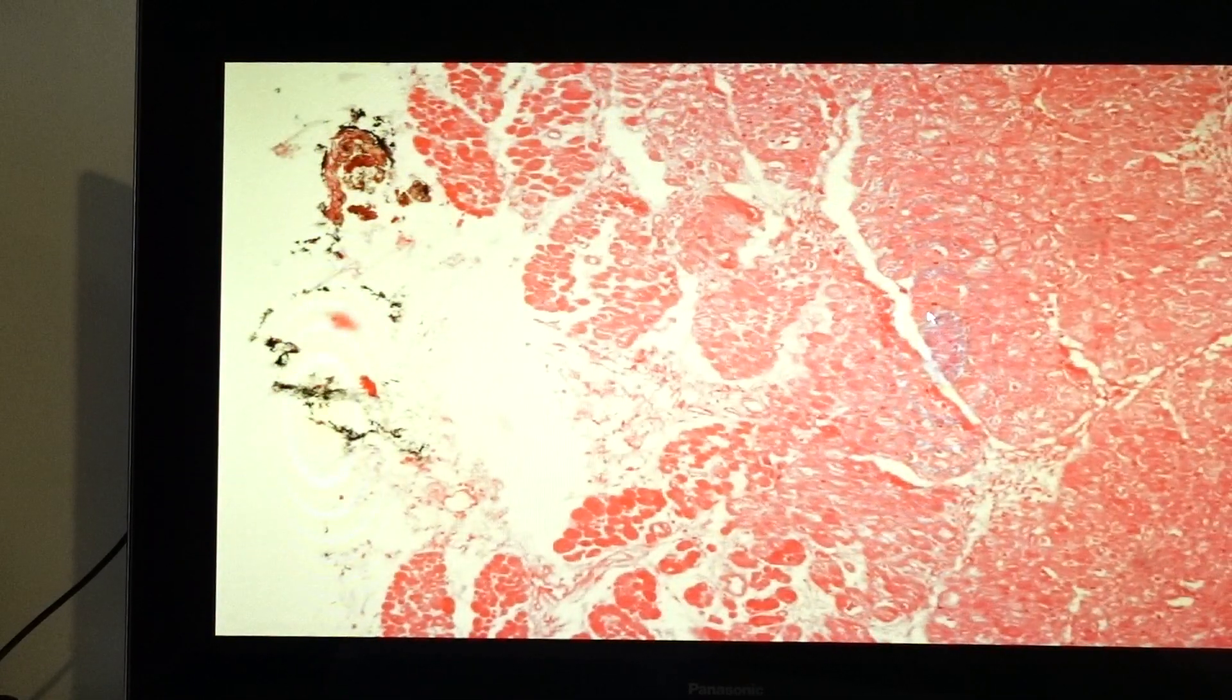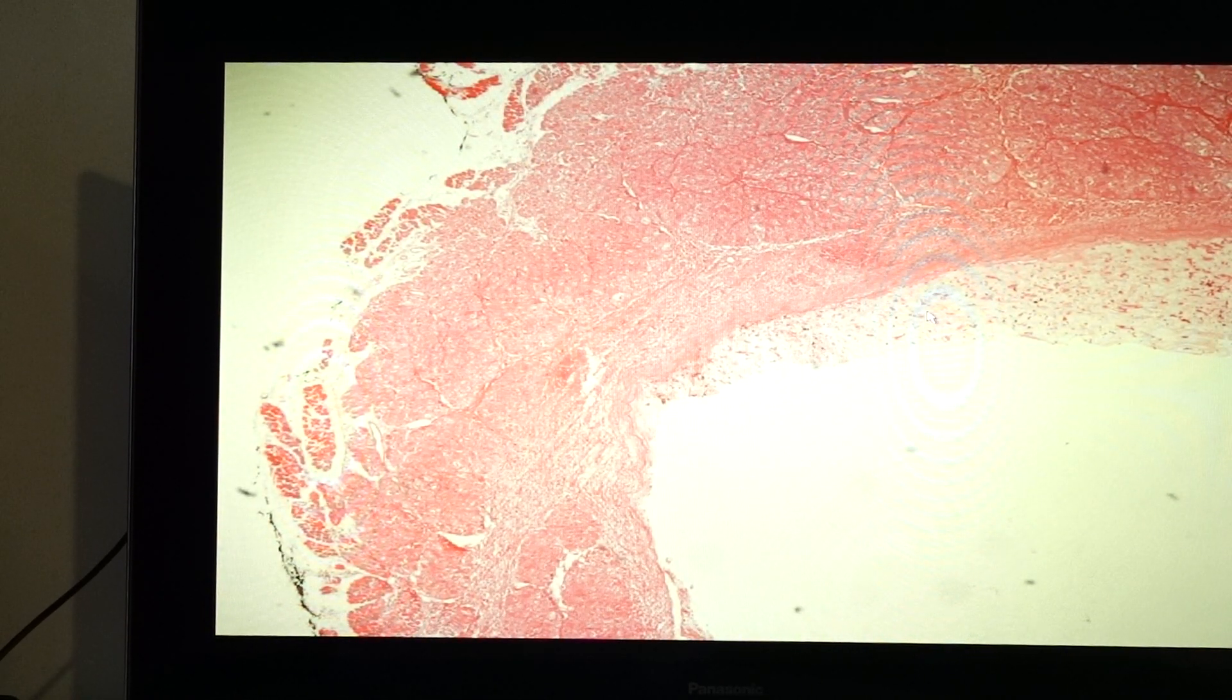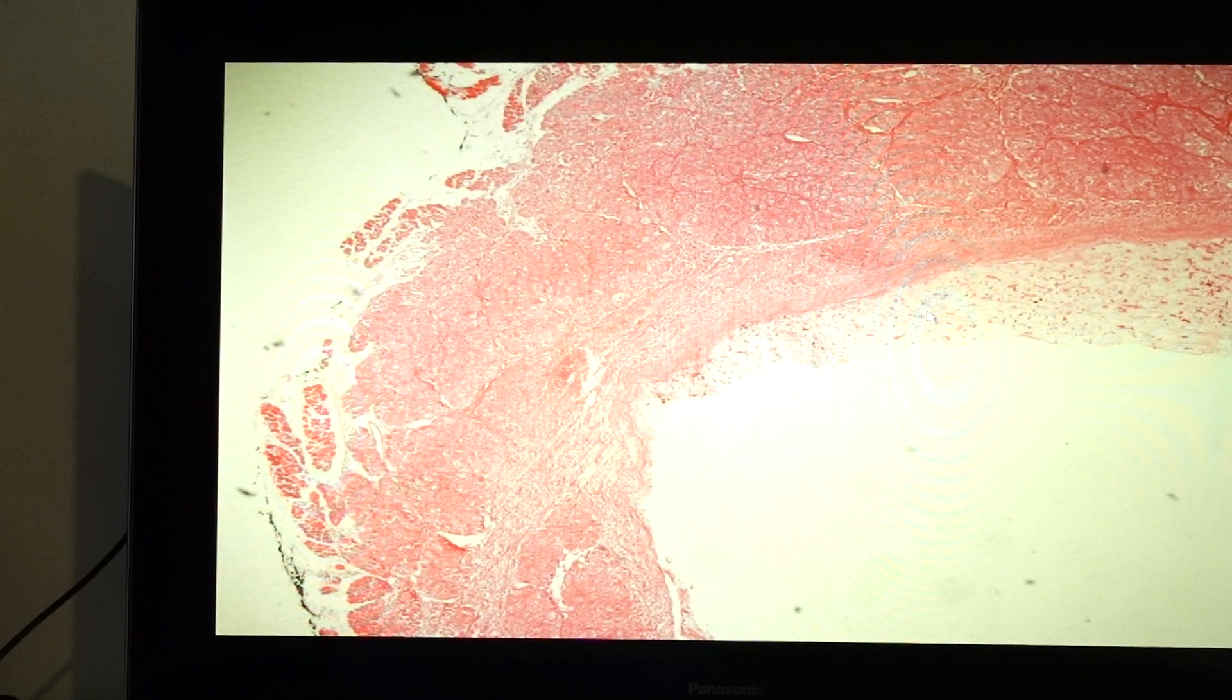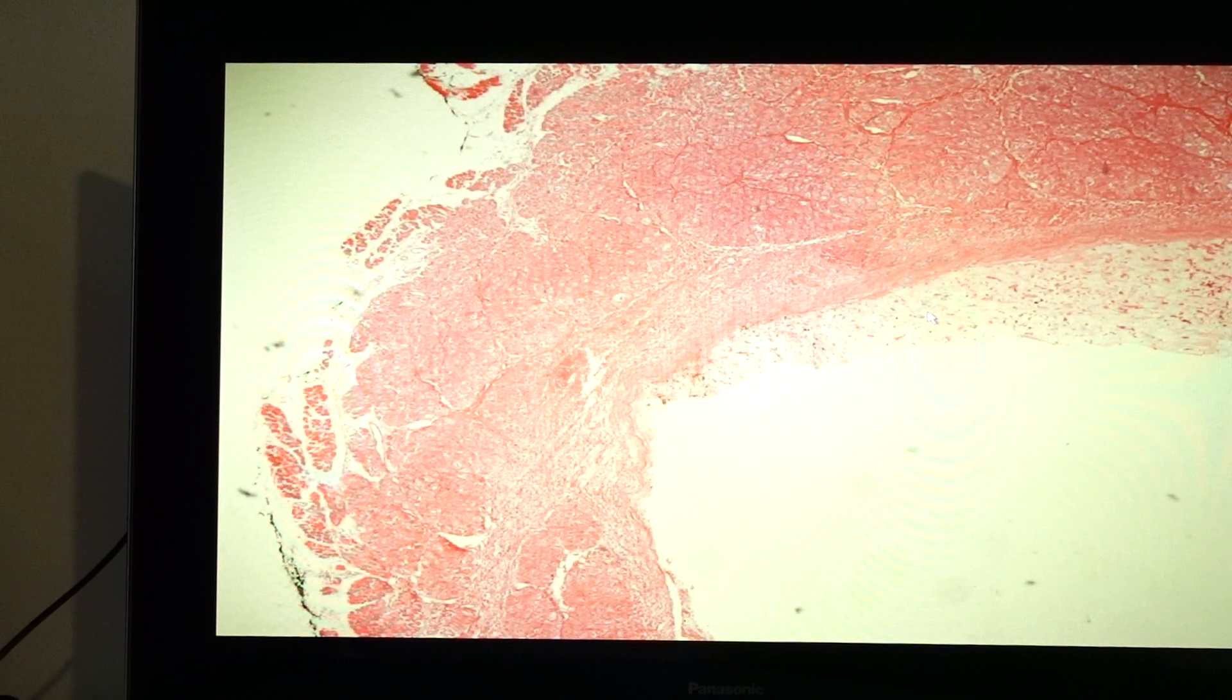Next, we have slide 166. This is cardiac myxoma. This is a tumor that would be the most common primary tumor of the adult heart because in children, it's the rhabdomyoma. For sporadic cases of cardiac myxoma, there are no mutations identified, but for familial cases, it's associated with GNAS1 mutation if it's associated with the McCune-Albright syndrome.